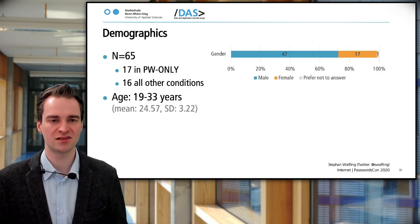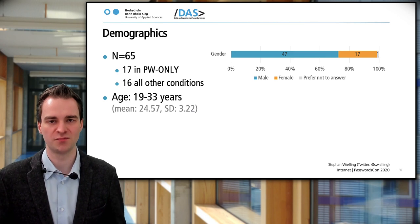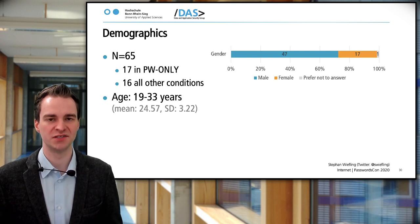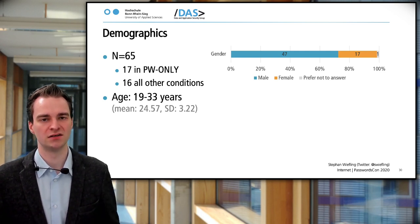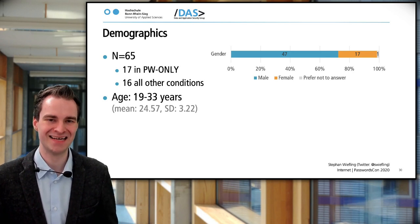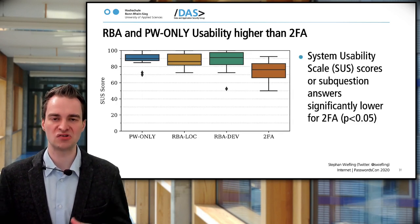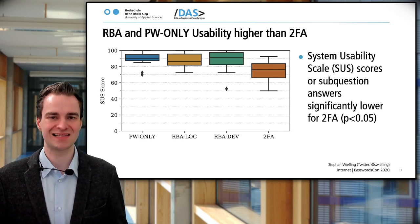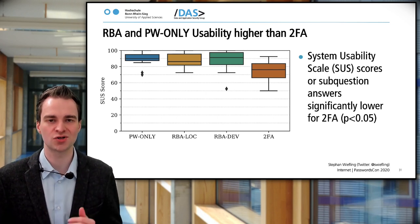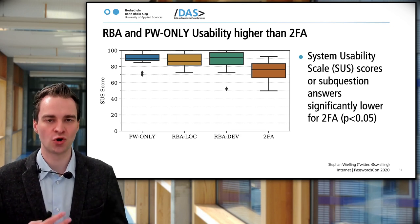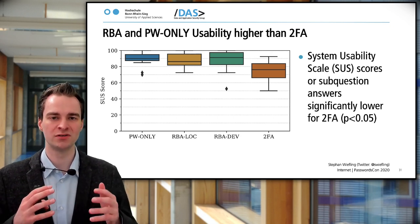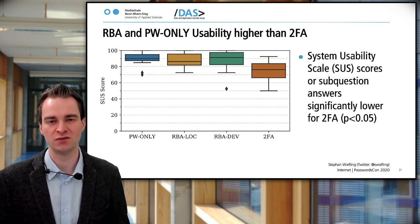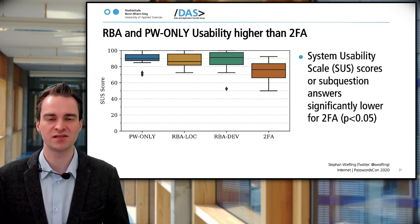These are our results. We had 65 participants — a young population, more skewed toward male but with female participants too, and one person did not state their gender. We measured usability using the System Usability Scale, which consists of 10 standardized questions producing a score between 0 and 100. You can clearly see on the graph that the usability of 2FA was significantly lower than that of password-only and risk-based authentication.